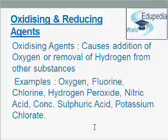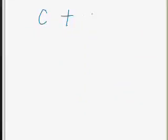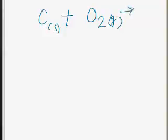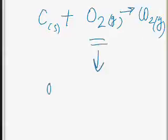Now we will discuss oxidizing and reducing agents. A substance which causes addition of oxygen or removal of hydrogen from other substances is called an oxidizing agent. Examples of oxidizing agents are oxygen, fluorine, chlorine, hydrogen peroxide, nitric acid, concentrated sulfuric acid, and potassium chlorate. For example, carbon (s) reacts with O2 (g) to produce CO2 (g). Carbon is oxidized to CO2 and oxygen is acting as the oxidizing agent.